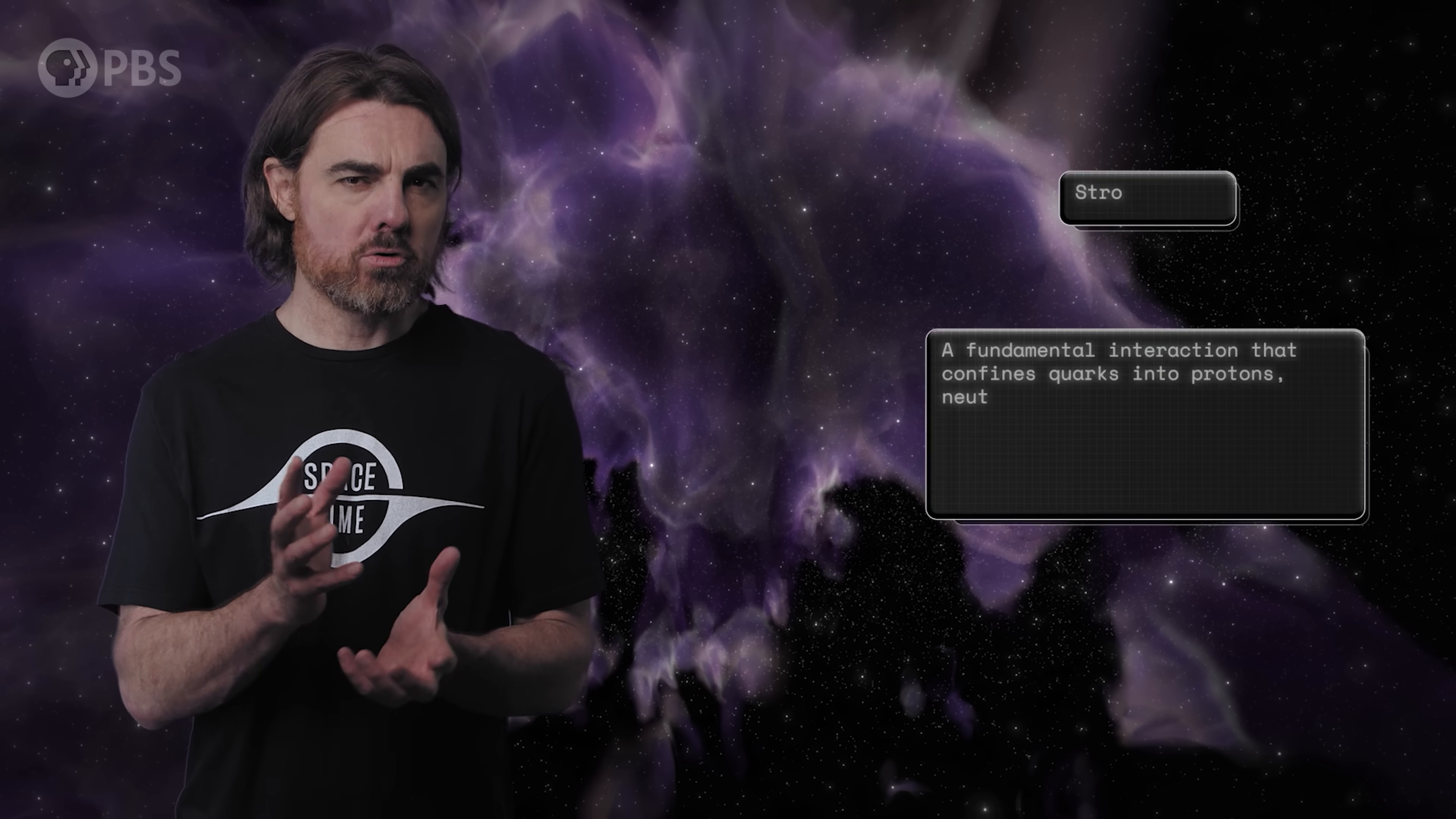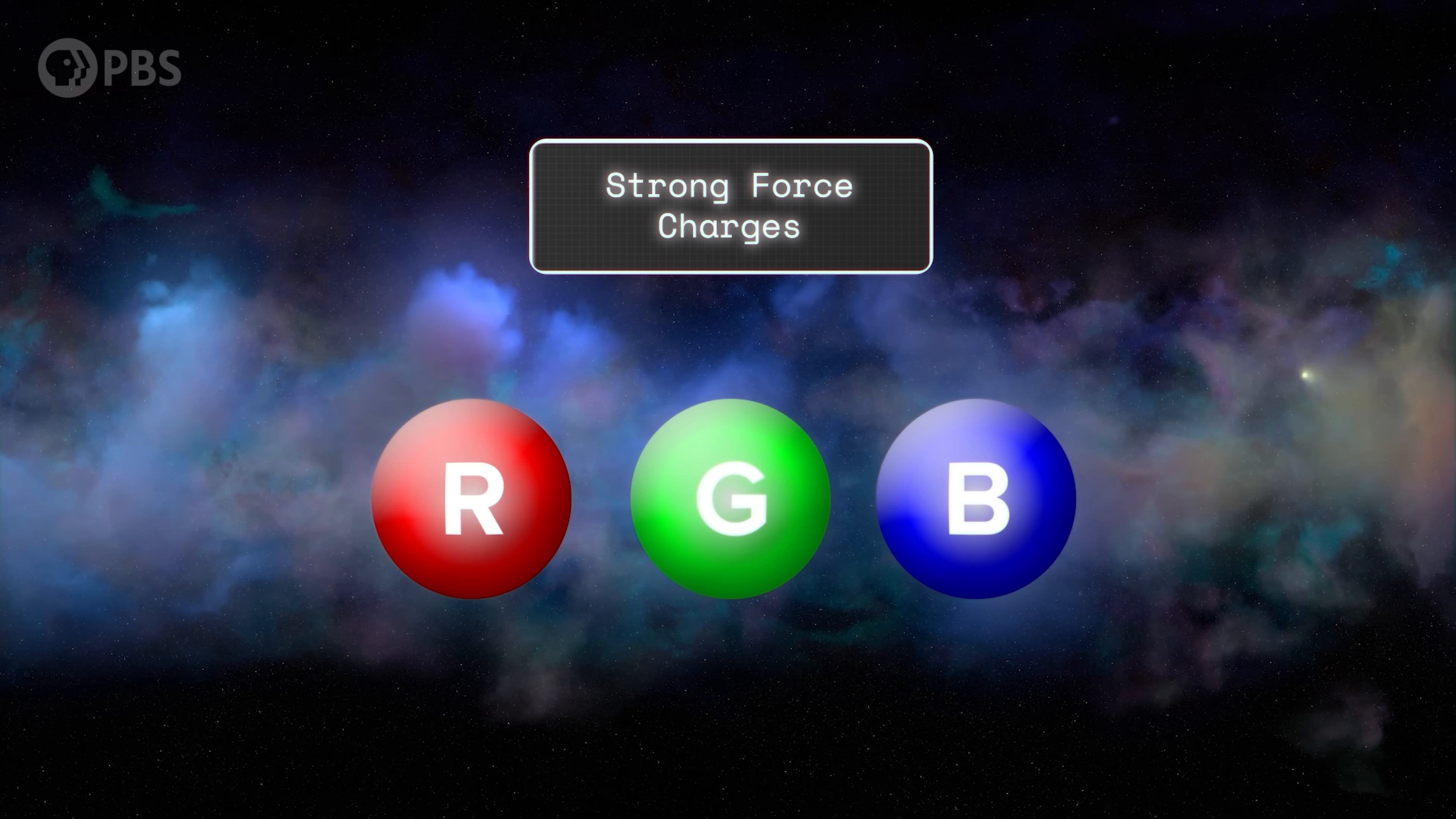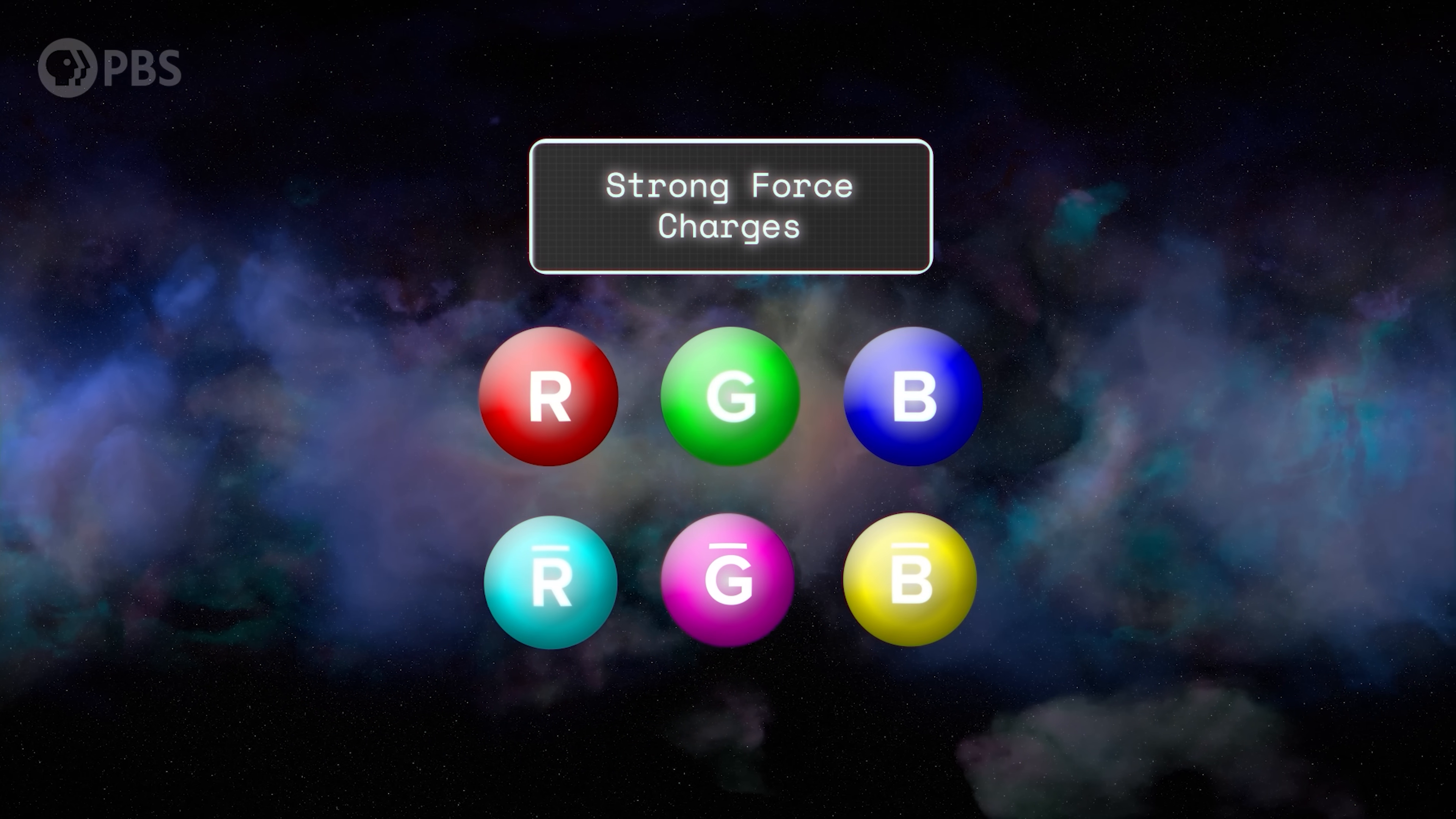But in short, the strong force holds quarks together in protons and neutrons, and holds those together in atomic nuclei. There is one type of charge associated with the electromagnetic interaction, electric charge which can be positive or negative, but there are three types of charge for the strong force. They're named after colors: red, green, blue, with their negatives being anti-red, anti-green, anti-blue. They aren't actually these colors, but the naming is not entirely a poetic choice. There's a deeper correspondence to how visible colors and the strong force colors are related to each other, which we explain in this video.